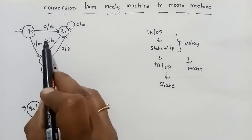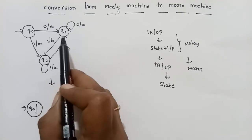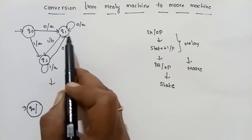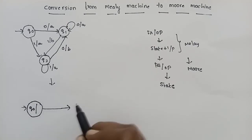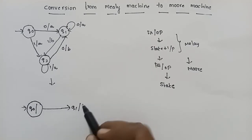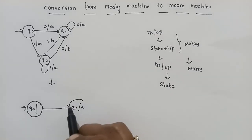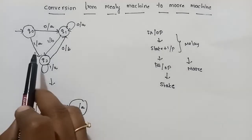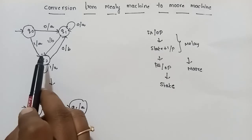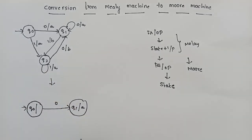So Q0 on input 0 goes to Q1 with output A. Q0 on input 1 goes to Q2 with output A.